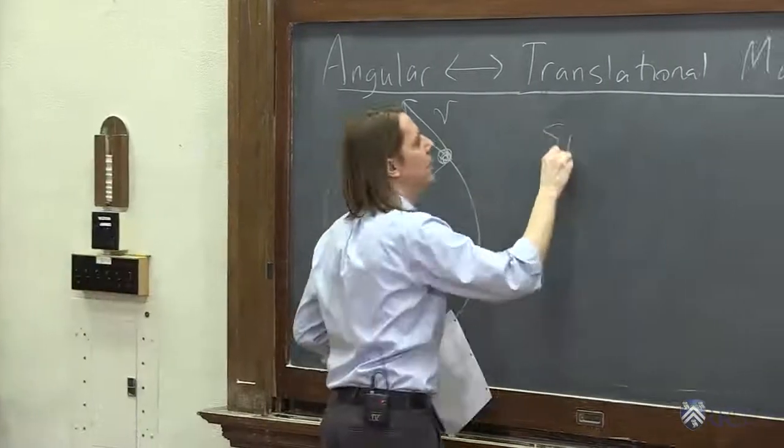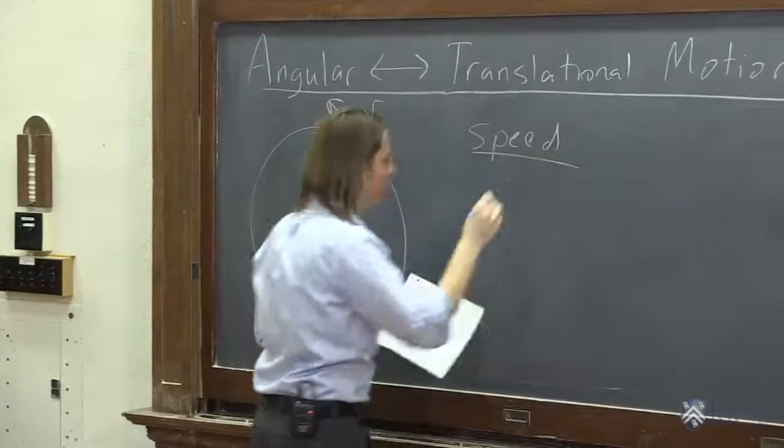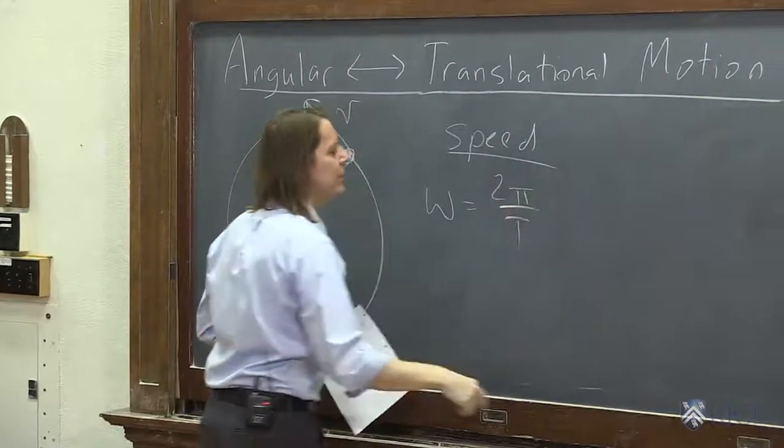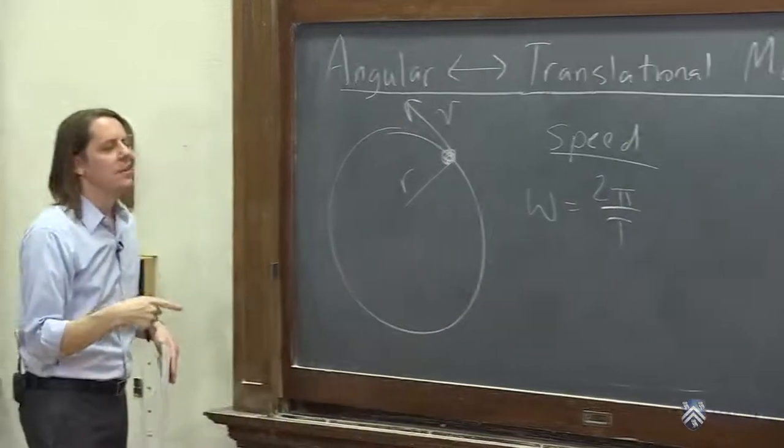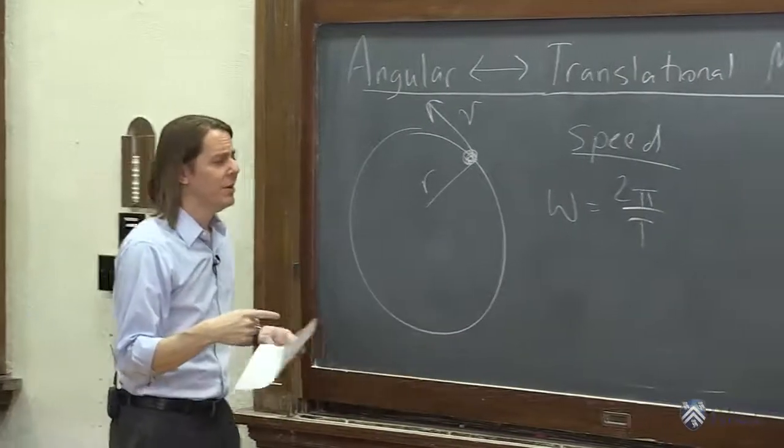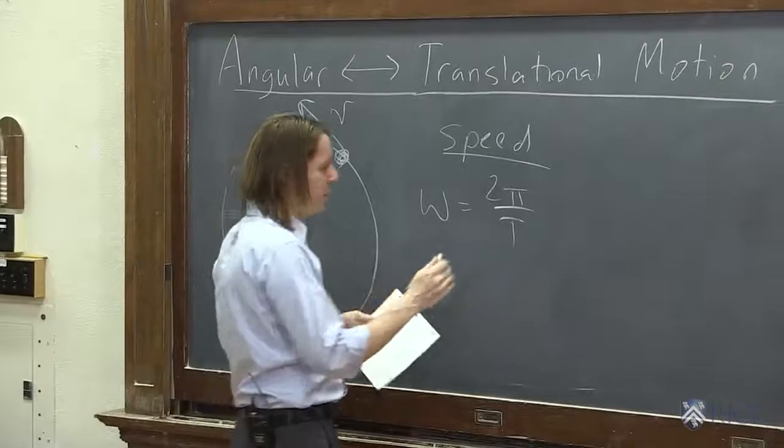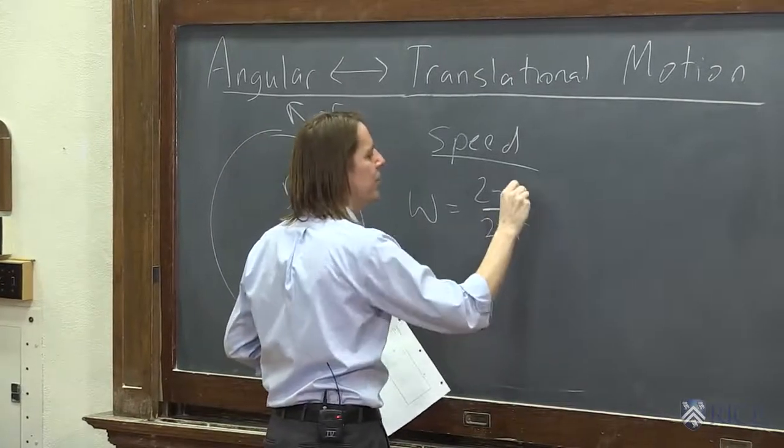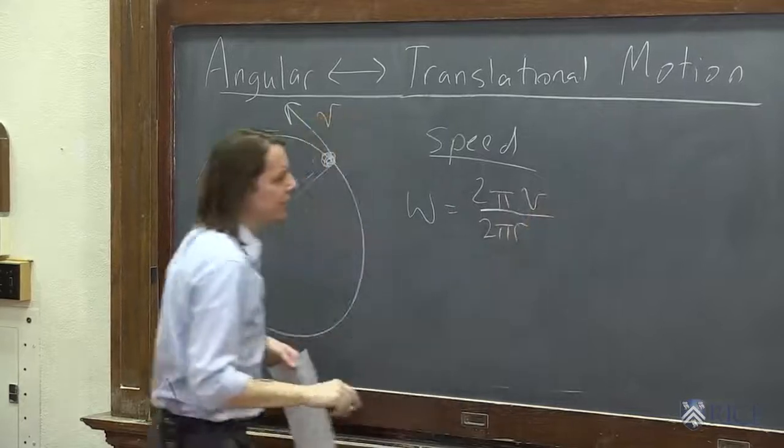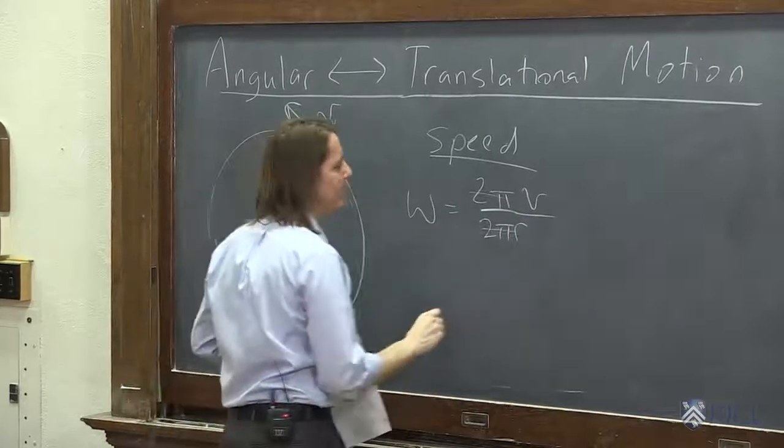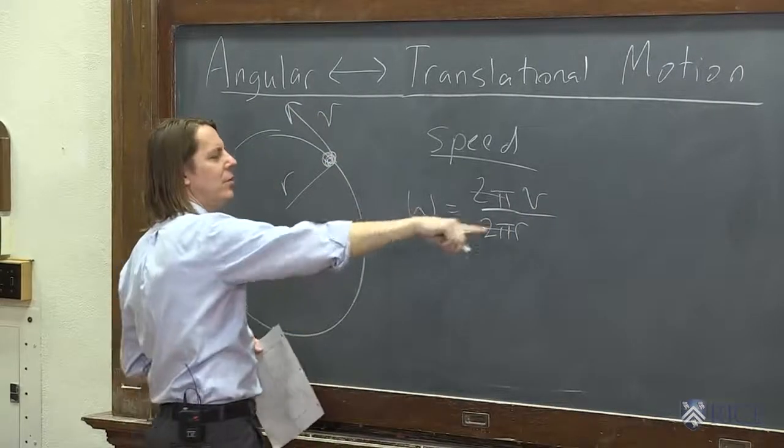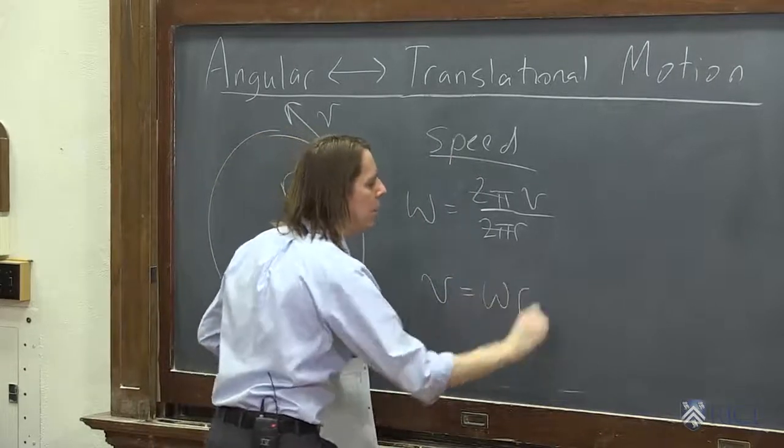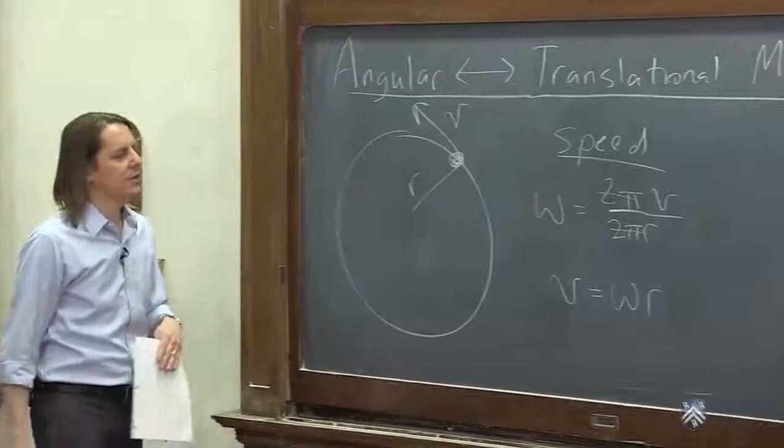So first let's look at the speed. We had this formula, we said omega is 2π over T, but then we did have T written in terms of the velocity. What was T? It was 2πr over v, right? T was how far it has to go, the circumference, over v. So you actually see in this case, the 2π's go away, and you can see an easy relationship between the speed and the angular velocity and the radius.